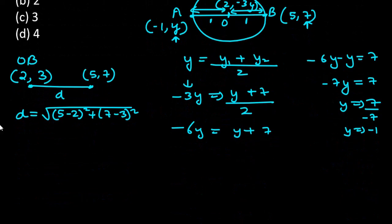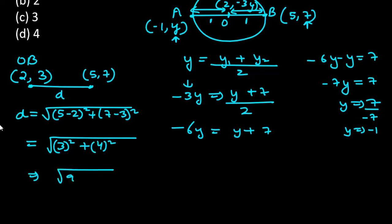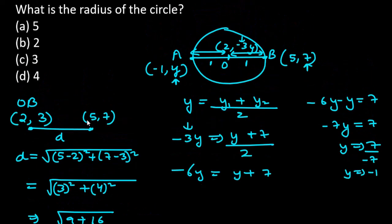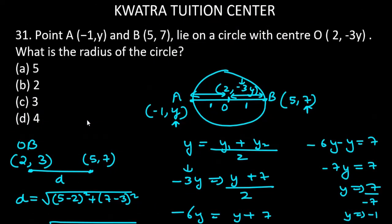So 5 minus 2 squared, then we have 7 minus 3 squared. 5 minus 2 is 3 squared, and 7 minus 3 is 4 squared. 3 squared is 9, 4 squared is 16. So you get the answer as root 25, or you can write 5 units. So 5 is the answer for the radius of the circle. Part A is the correct one. Now we will be moving to question number 32.